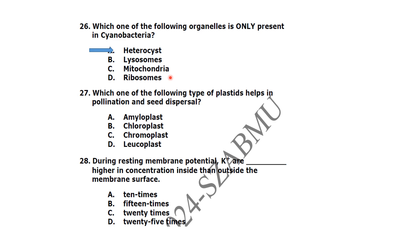Which one of the following types of plastids helps in pollination and seed dispersal? Chromoplasts help in pollination. Option C is correct.